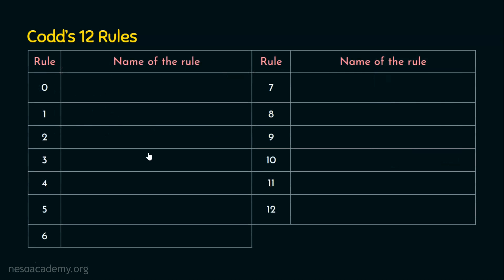Let's see all the rules one by one. The rules start from rule number 0 and end with rule number 12, giving a total of 13 rules. Rule number 0 is the foundation rule. Any system that is advertised or claimed to be a relational database management system must be able to manage the databases entirely through its relational capabilities.